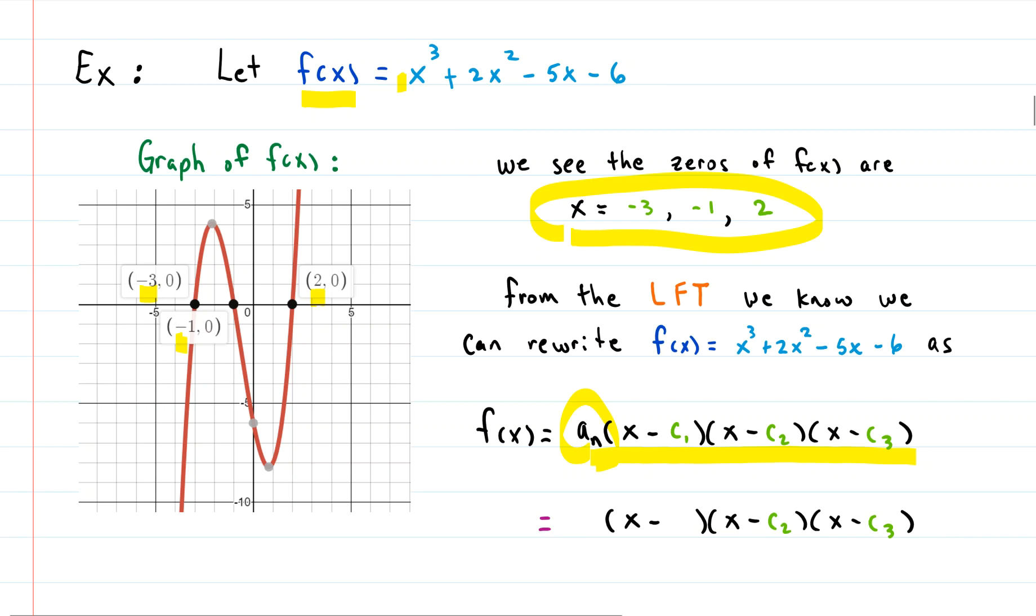3, so instead of c₁ we're going to put in -3. And the second one is negative 2 - sorry, negative 1 - so let's put in a -1. And the third one is 2, c₃ is 2, so